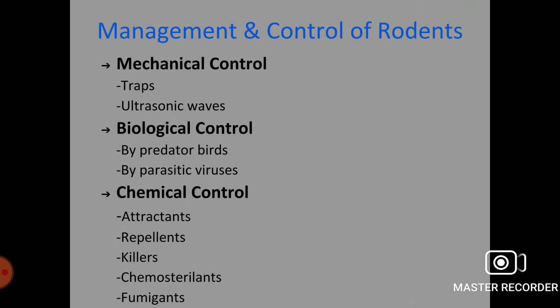Next we deal with the control and management of rodents. There are various methods of control: mechanical control using traps and ultrasonic waves; biological control using predator birds and parasitic viruses; and chemical control using various types of attractants, repellants, killers, chemosterolants or fumigants.